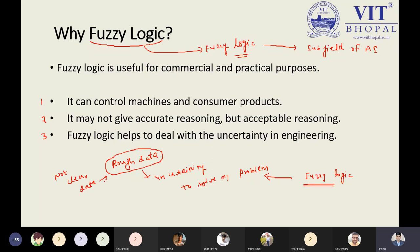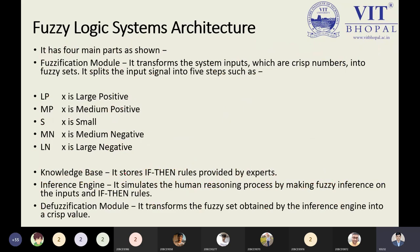From this point we have the components. Just as a knowledge representation system has its own components, a fuzzy logic system has its architecture composed of four important components. The first one is the fuzzification module.